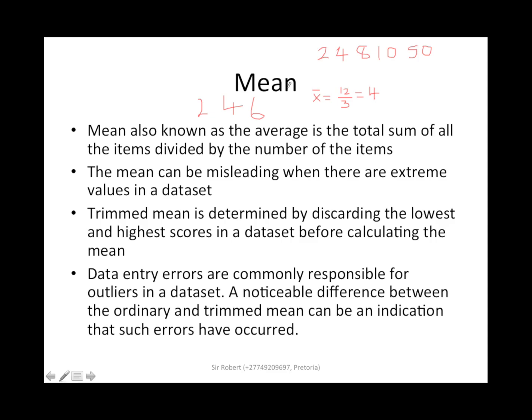When I want to incorporate the issue of the trimmed mean, it means if we start by calculating the normal mean, we add the numbers. So it will be like 50 plus 10 is 60, and 8 plus 2 is 10, that will be 70.